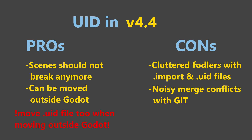As for the drawbacks of UIDs, there are two loud voices. First, there are a lot of complaints about cluttered folders with extra files like the .import and .uid files, especially the latter ones that are new. You also have to make sure that you do not put these .uid files in the .gitignore if you are using Git. Apparently there is also a lot of concern about merge conflicts when using Git services, which seems to be especially a concern for people with large projects and large teams — something I am unfortunately unfamiliar with, so I will abstain from a personal analysis about this topic.